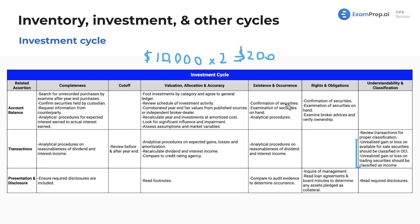For existence and occurrence, you want to confirm securities. If they're being held by someone, make sure they exist — physically see the securities or see where they are. You want an examination of securities on hand; maybe the company is holding something — take a look at them. Perform analytical procedures as well. For rights and obligations, confirm the securities: ask whoever's holding them whether this entity has full rights, they didn't pledge it to anyone. Examine broker advices and verify ownership. Make sure securities are not pledged.